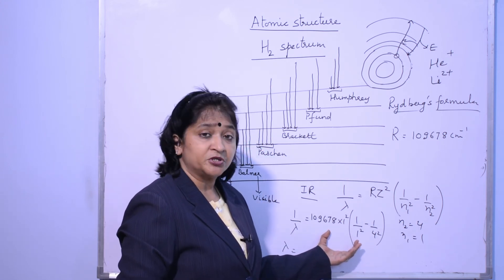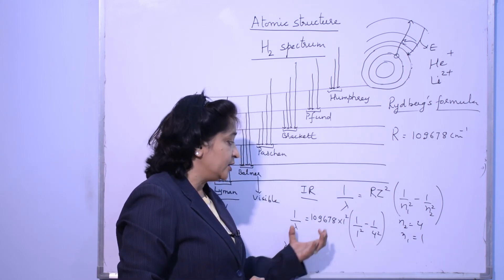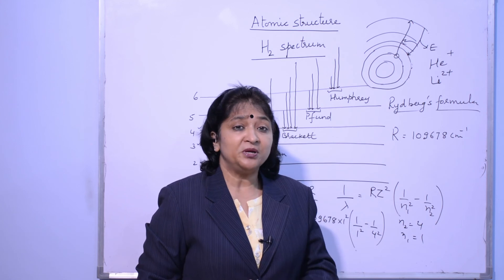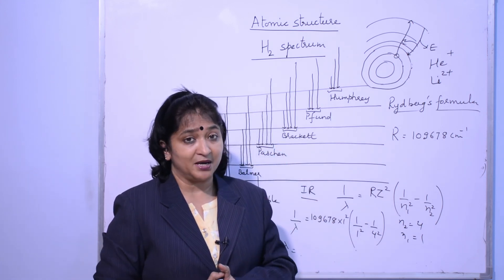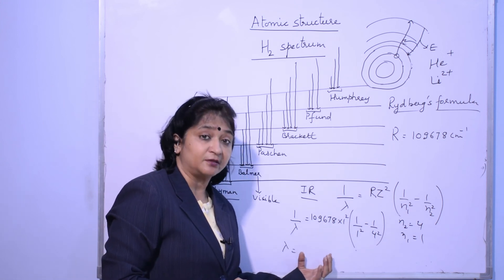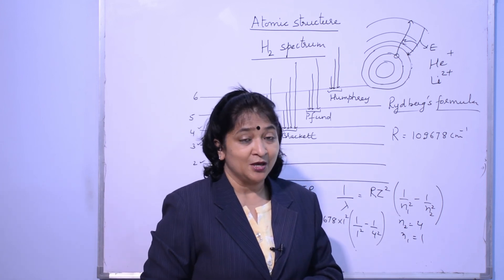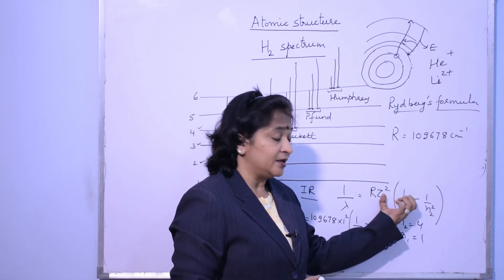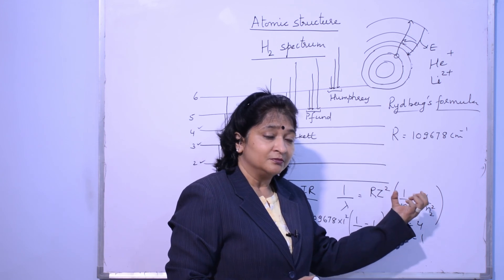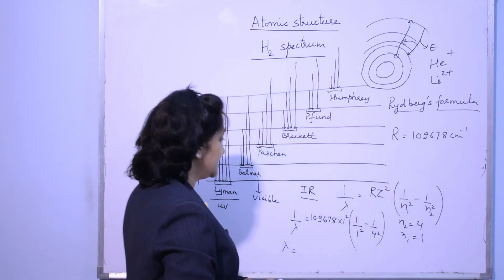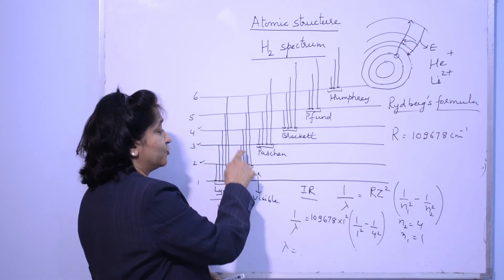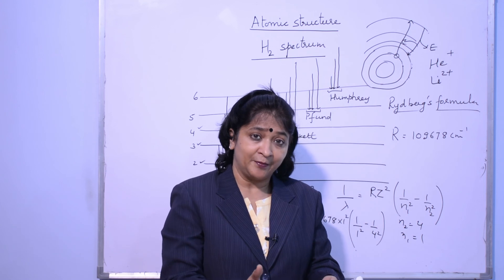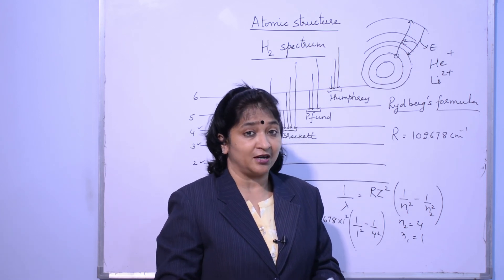When you calculate, you will get the wavelength value in centimeters. You have to see in the question whether you have to calculate wavelength in nanometers or in angstroms or in picometers. Based on that, you can do unit conversion. You know unit conversion, I am assuming this. So in this way hydrogen spectrum questions are to be done. If suppose it is given that electron is falling from fourth transition line in Balmer series, then Balmer series means N1 will become 2. And fourth transition line: 1, 2, 3, 4, means N2 will become 6. So this way you have to see all the things and read the question carefully and solve.